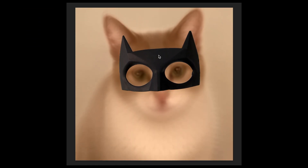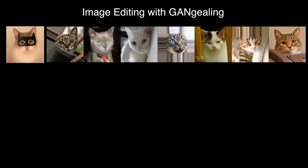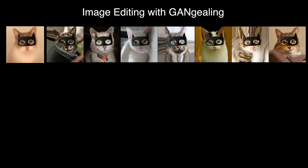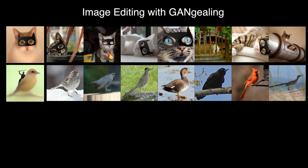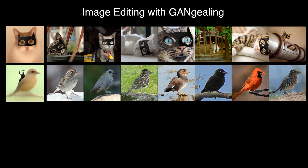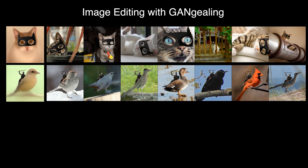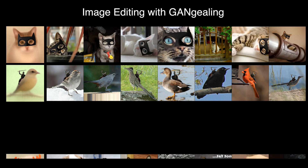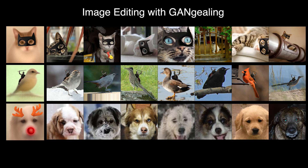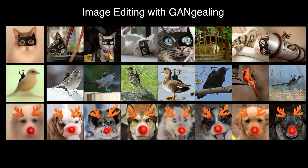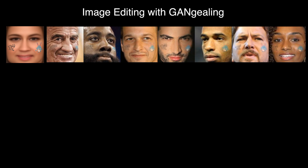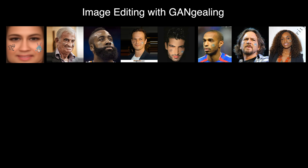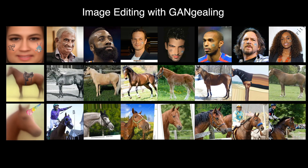Our average congealed image is a template which can propagate anything to images of the same class. For example, by dragging a Batman mask onto our average congealed cat, a user can effortlessly propagate their edit to a massive number of images. A user can also put a soldier onto a bird template, turn their dog into Rudolph the Red-Nosed Reindeer with just a few edits on our average congealed ELSEN dog image, propagate tattoos on faces in the wild, add saddles to horses, or add unicorn horns using one of our other learned horse templates.